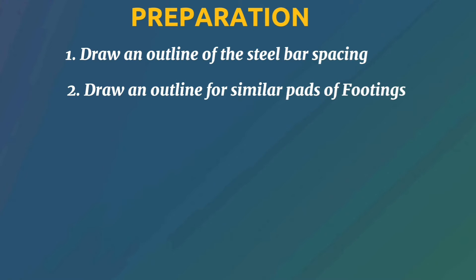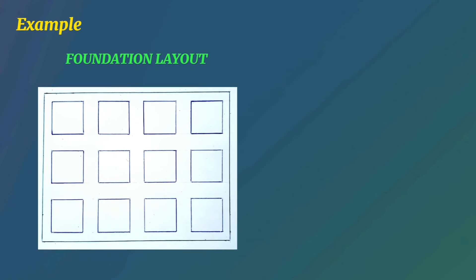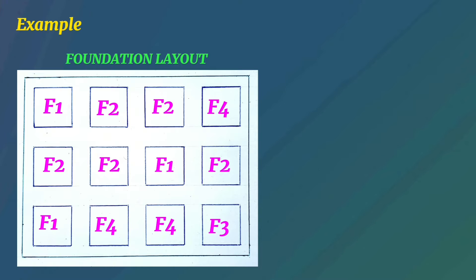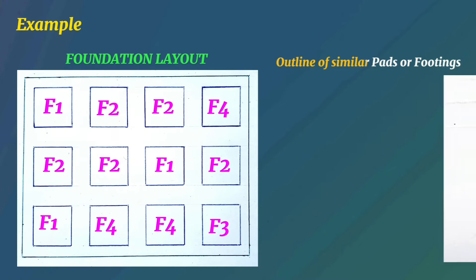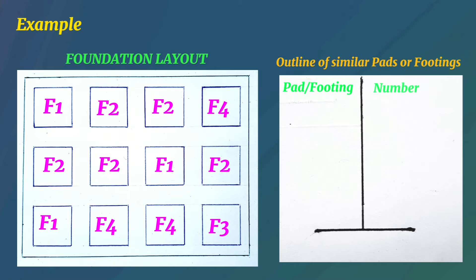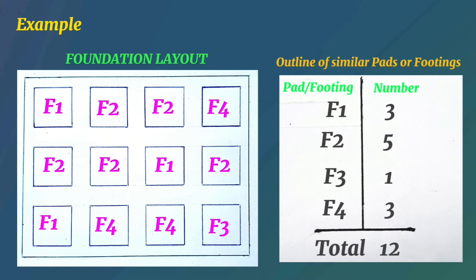The second step is to draw an outline for similar parts of footings. For example, if this is our foundation layout, you'll come across footings which have the same size. Footings with the same size are always given the same name — footing F1 has the same size as other F1 footings, and footings labeled F2 have the same dimensions along the length, width, and depth. So under step 2, we draw a table showing footing types on the left and total number on the right. In our example, we have three F1 footings, five F2 footings, one F3, and three F4 footings — twelve total. Most footings on a project are similar, which is why we categorize them by size.